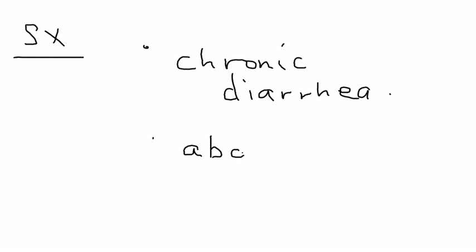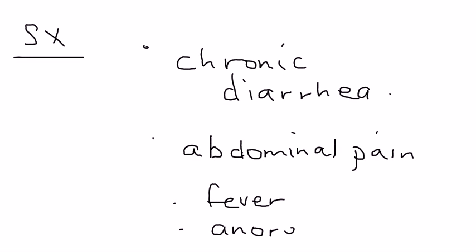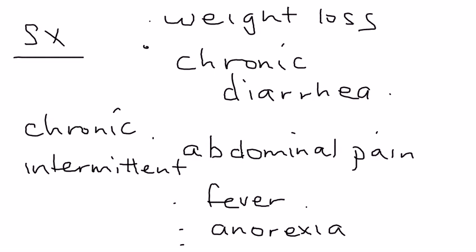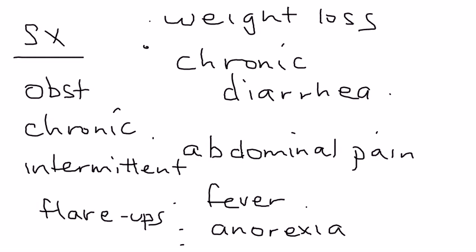The symptoms of Crohn's disease include chronic diarrhea, abdominal pain, fever, anorexia (loss of appetite), and weight loss. This can happen in episodes — it's a chronic disease but can be intermittent, with periods known as flare-ups. Flare-ups are a very worrisome part of the disease. Because of the strictures, patients can also develop bowel obstruction.